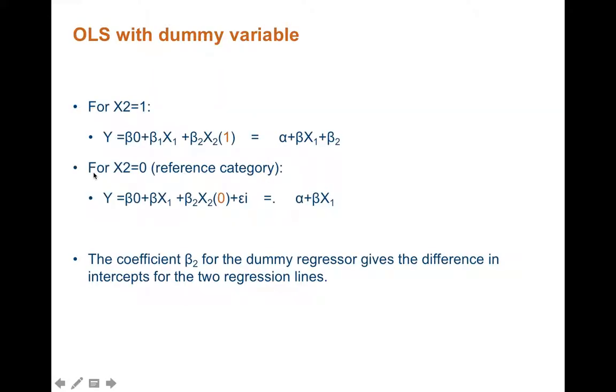This short tutorial aims at explaining theoretically how to interpret an interaction effect in an ordinary least square regression. First, imagine an OLS regression where Y is the dependent variable, beta 0 is the intercept—in other words, the value of Y when the value of the predictors is 0.